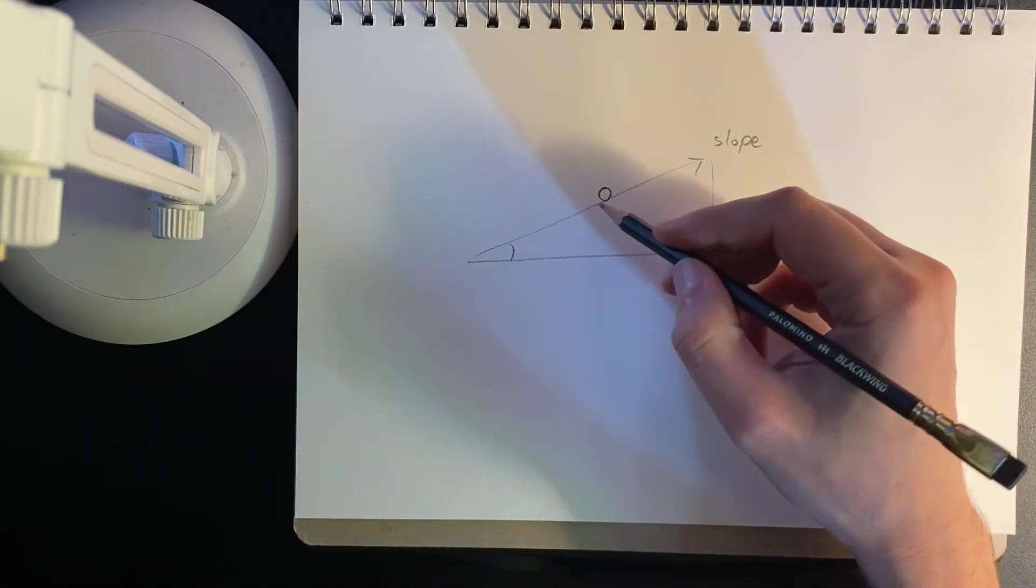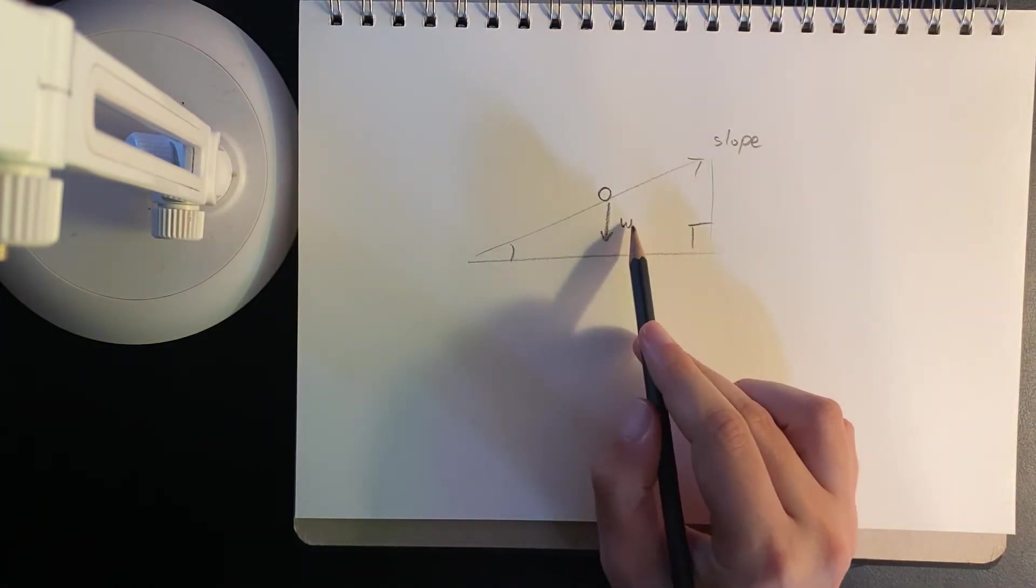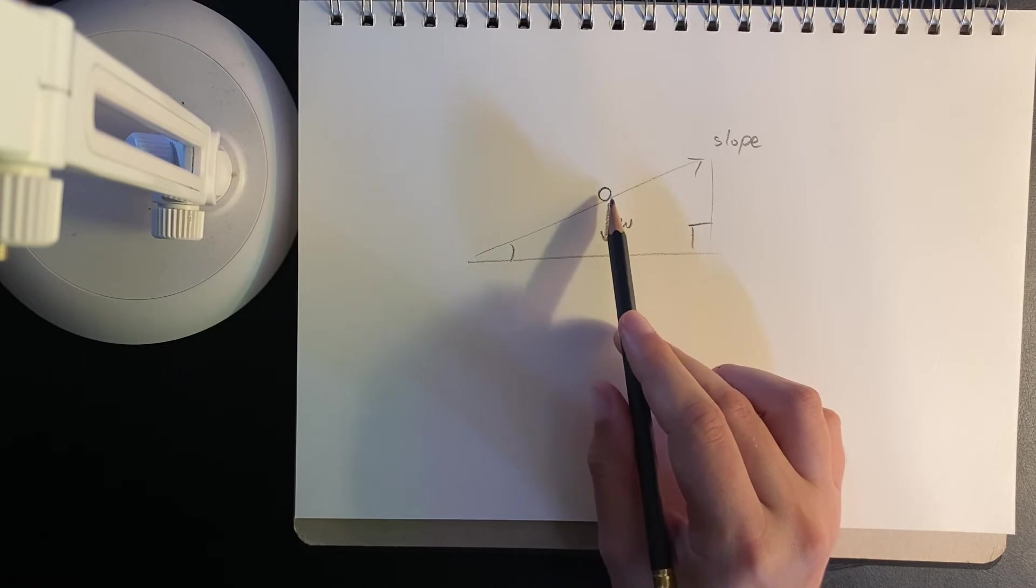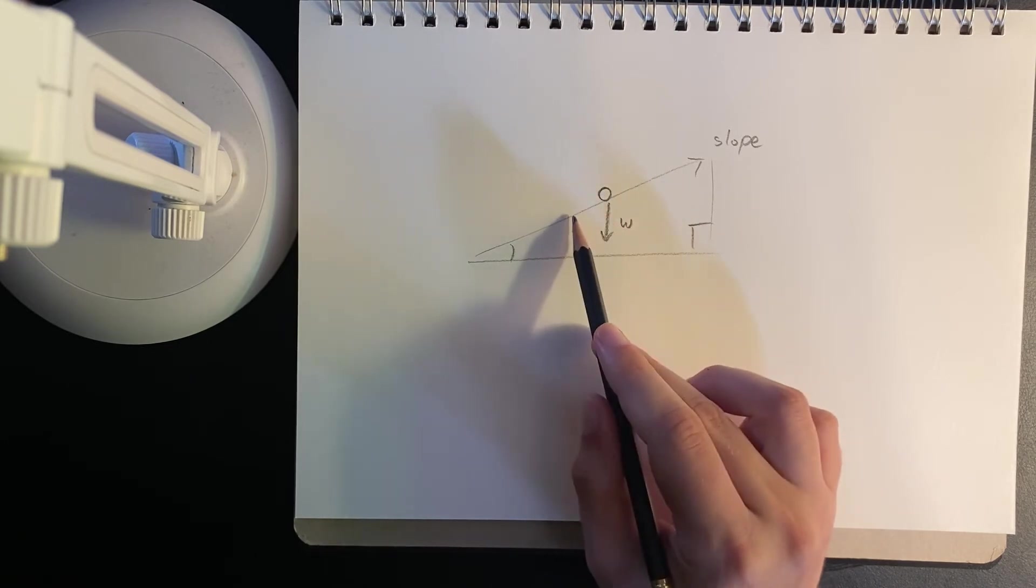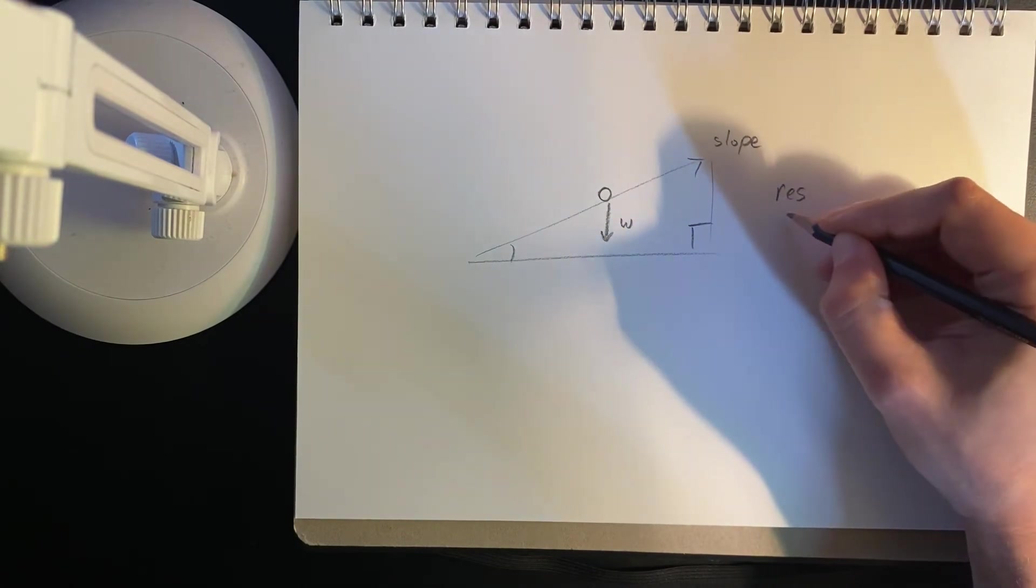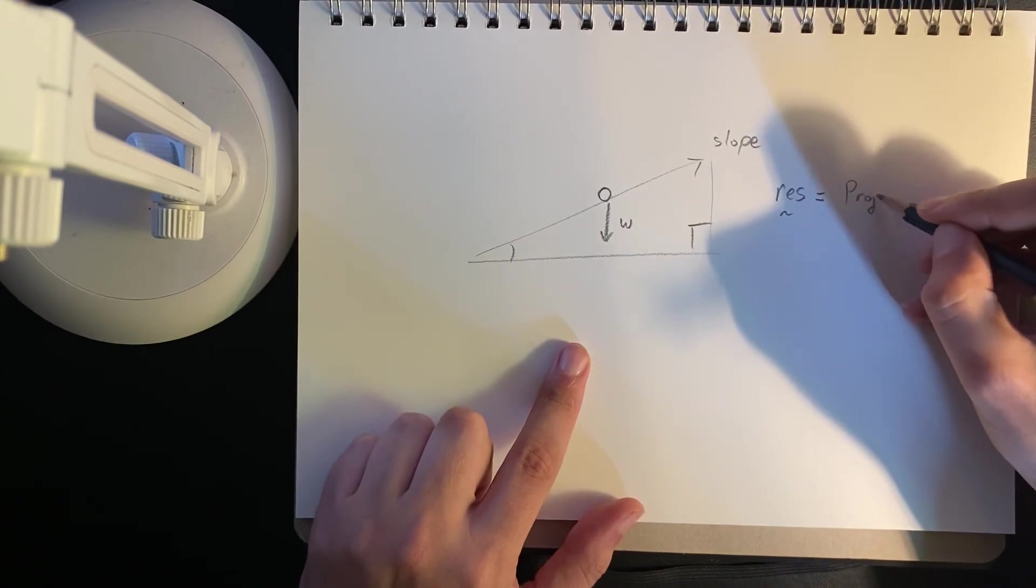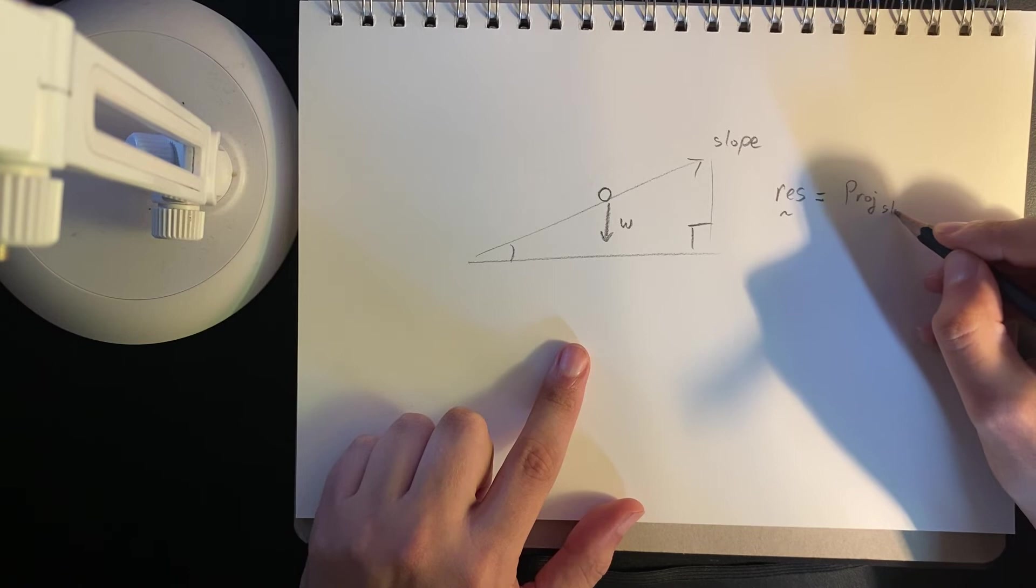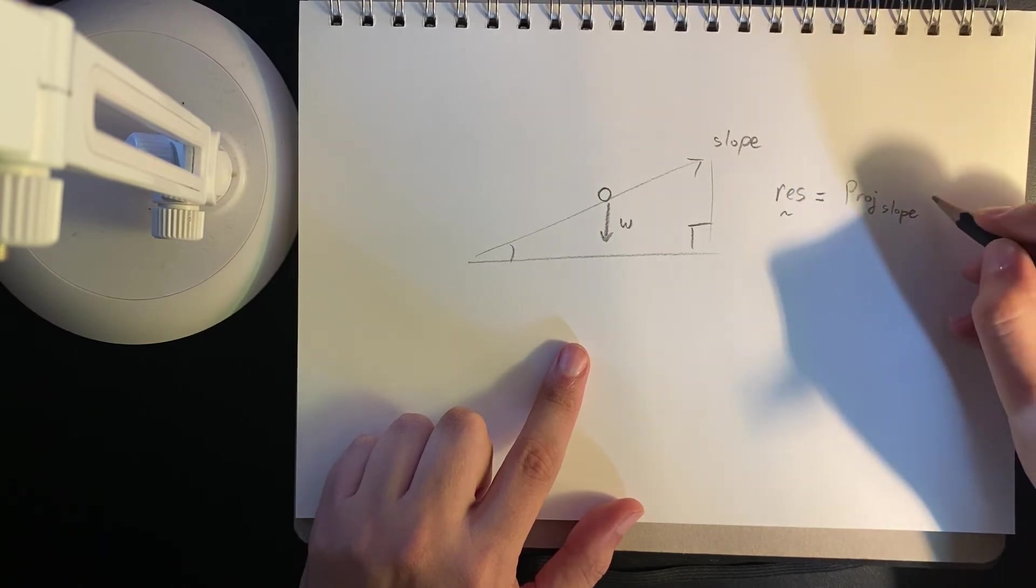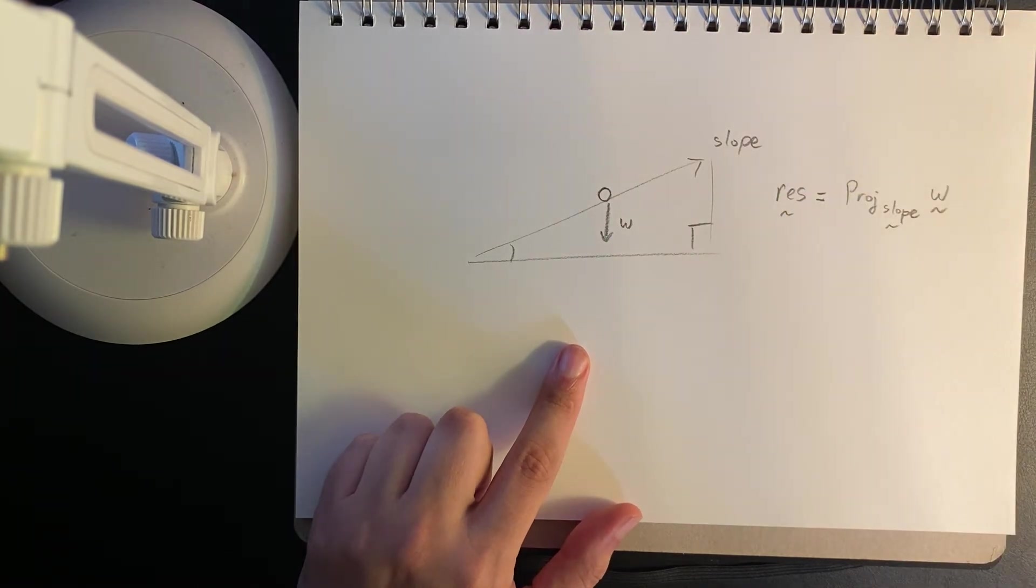So what we do is we say, okay. We sort of want to get the component here, which is parallel with the slope. So we say, okay, the resultant force is the projection onto the slope of the weight force. You know, weight equals mg. And just to add a little bit extra, this weight force decomposes into two components.